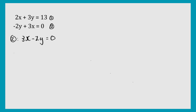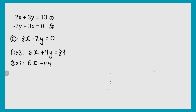With your first equation, you need to multiply it by 3. So 2x multiplied by 3 is 6x, 3y multiplied by 3 is 9y, and 13 multiplied by 3 is 39. Now your second equation, you just need to multiply by 2. So 3x multiplied by 2 is 6x, negative 2y multiplied by 2 is negative 4y, and 0 multiplied by 2 is still 0.